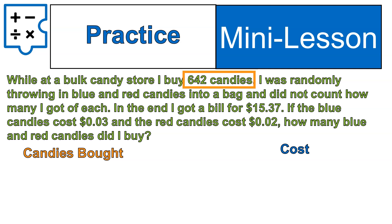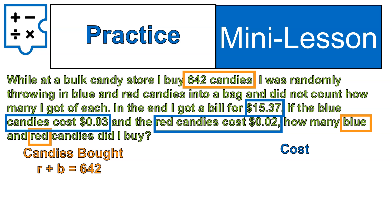The candies that were bought — there's a total of 642 candies, some are blue and some are red. So I'm going to add them together: red plus blue equals 642. The next equation is the cost. We're given that the bill came to $15.37 for buying red and blue candies. The blue candies cost $0.03 and the red candies cost $0.02. So $0.03 times the blue candies plus $0.02 times the red candies will equal a total of $15.37.